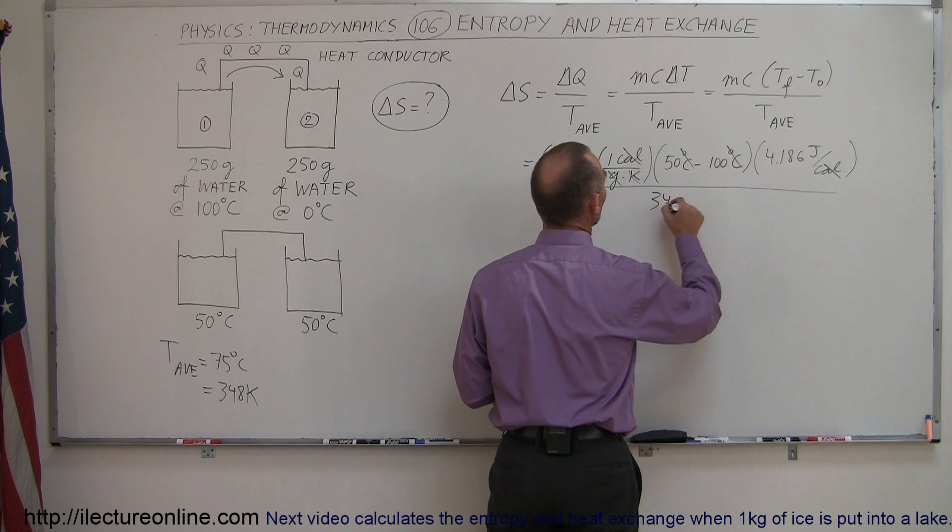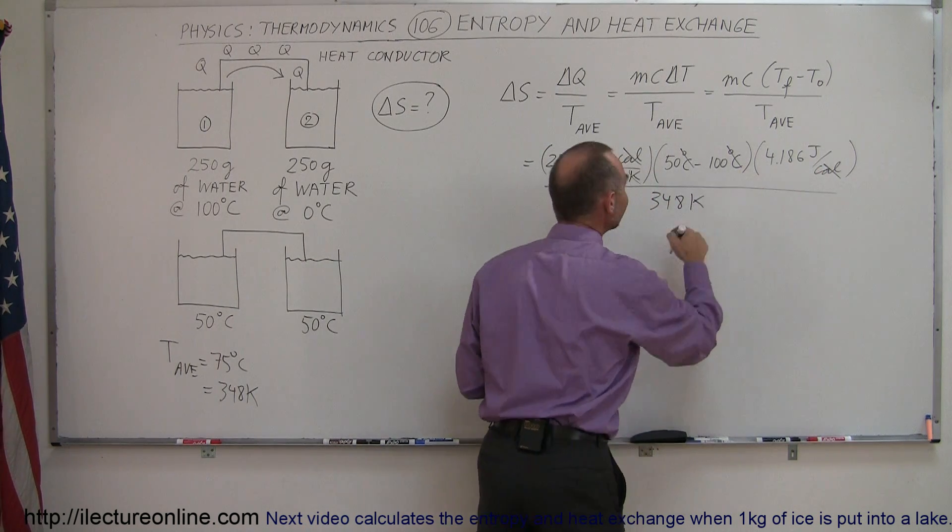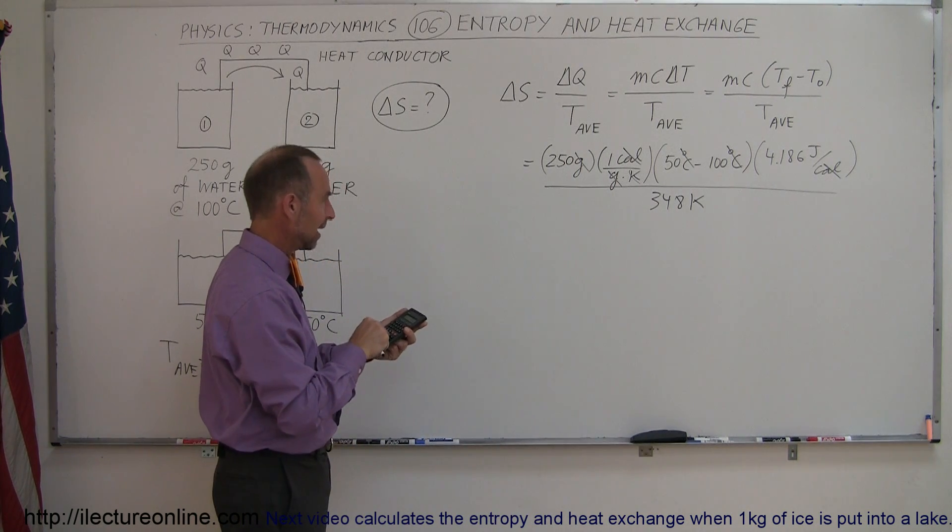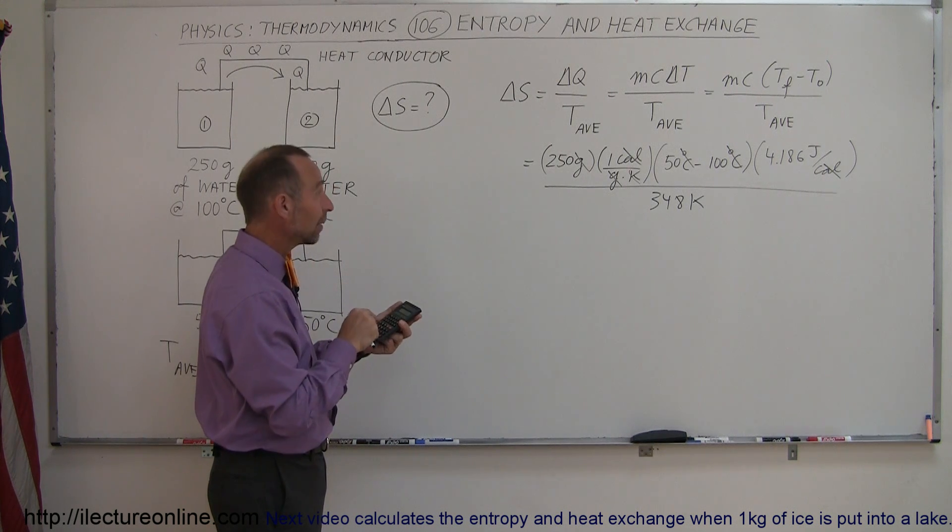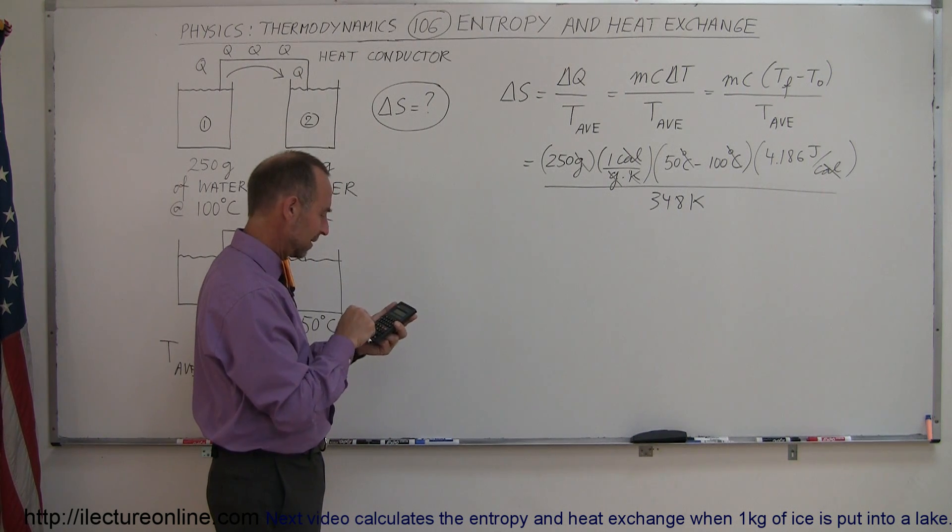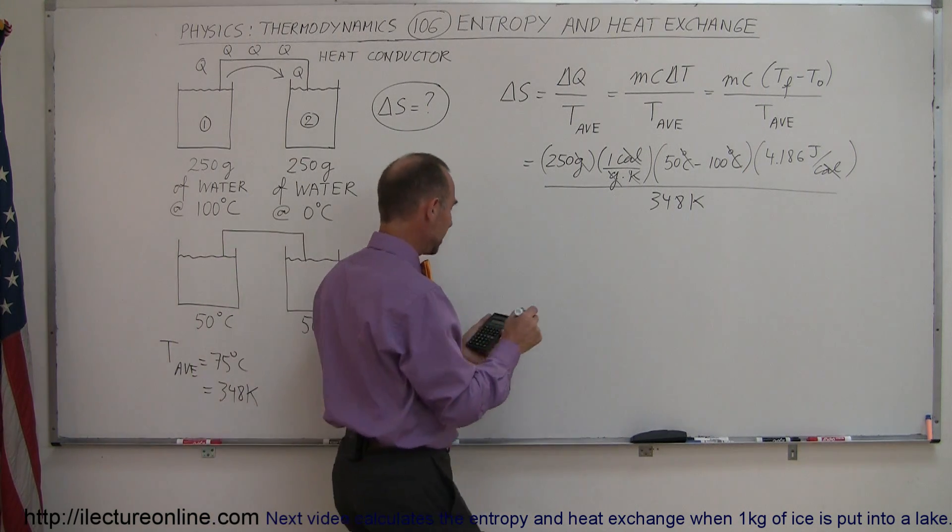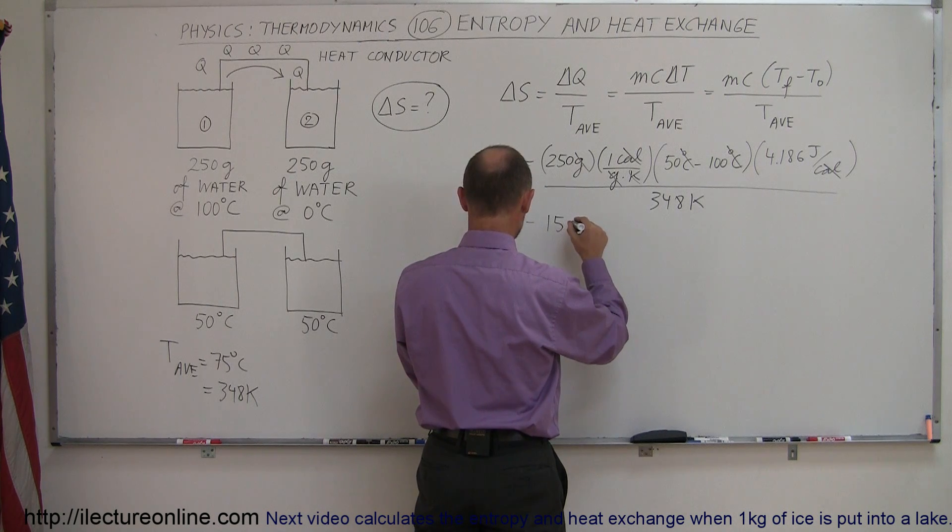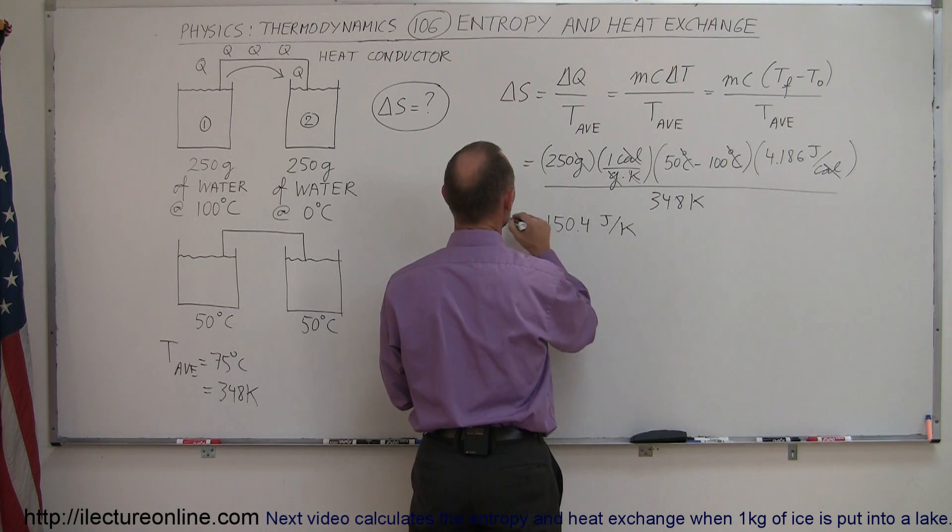Alright, so we divide that by 348 Kelvin, and now you can see the units are going to be joules per Kelvin, and that's correct. So, 250 times a negative 50 times 4.186 and divided by 348 equals, and that would be a minus 150.4 joules per Kelvin.